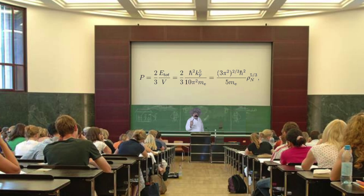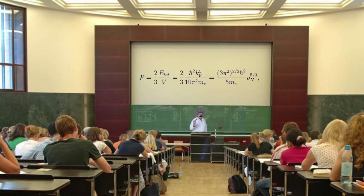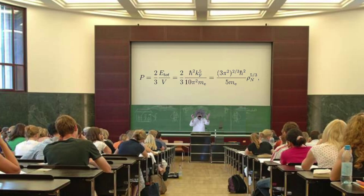But degeneracy pressure has limits. And if that neutron star was too massive, or if it gained mass from some companion star, then it might exceed that limit. And if that limit is breached, then nothing we know can resist the intense gravitational force, and the neutron star will collapse and collapse and collapse into...